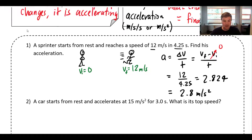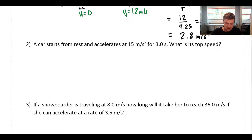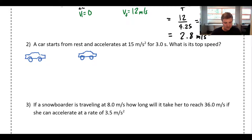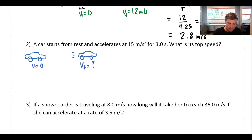Let's look at another example. A car starts from rest and accelerates at 15 meters per second squared for 3.0 seconds. Drawing a picture — this is what every car I've ever drawn since kindergarten looks like, so if you can draw at least that nicely, no grumbling about drawing pictures. The car starts off not moving, so the initial velocity is zero, and then it's scooting along with an acceleration of 15 meters per second squared.